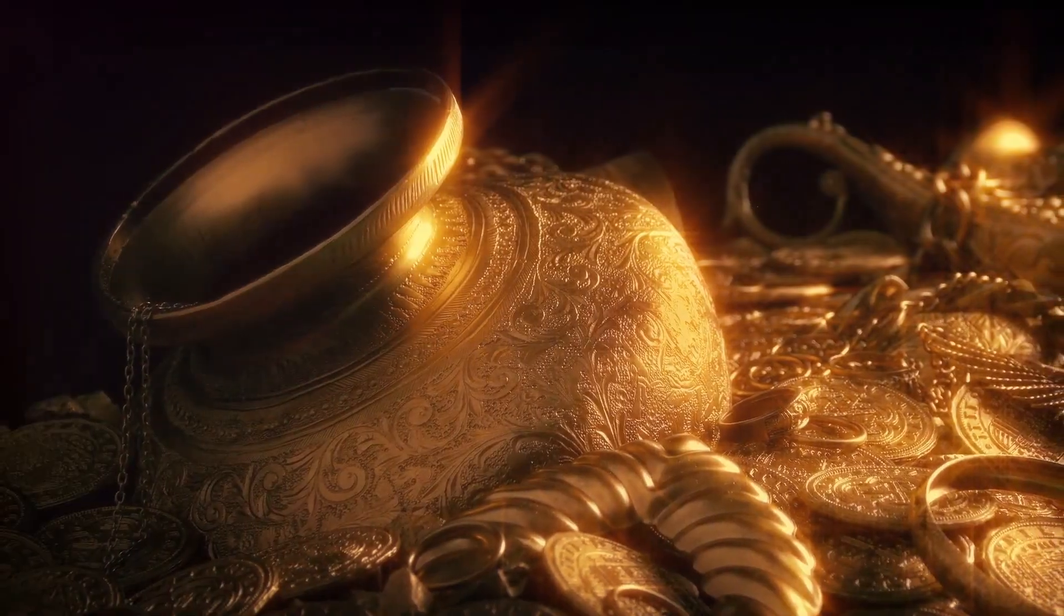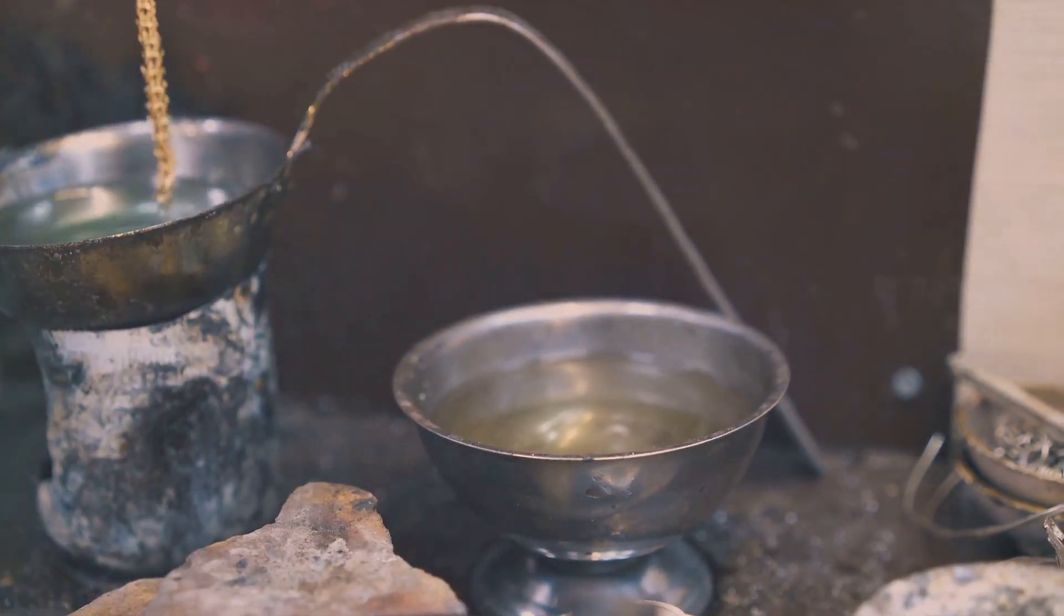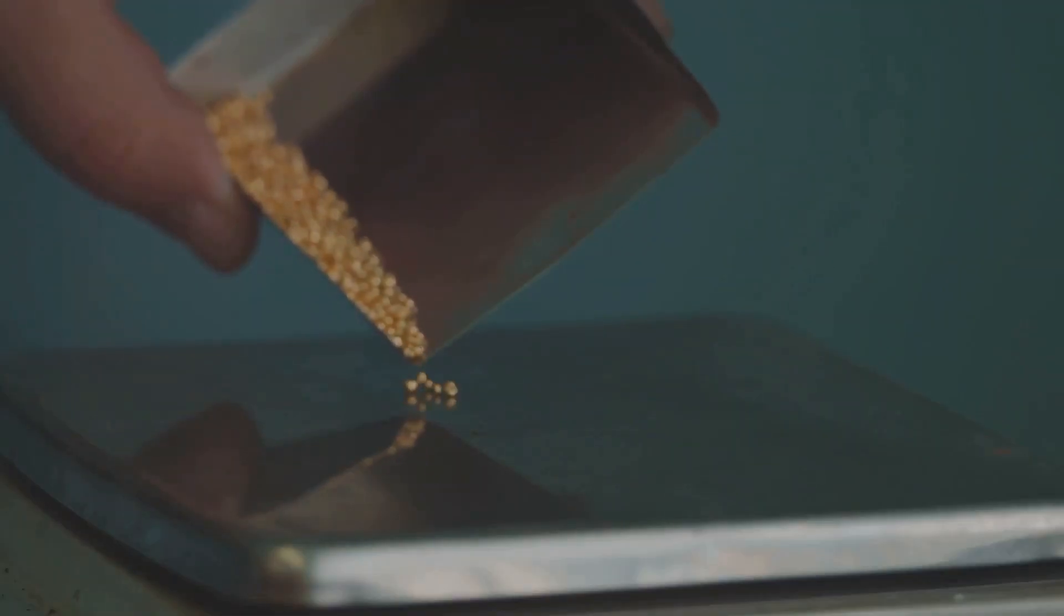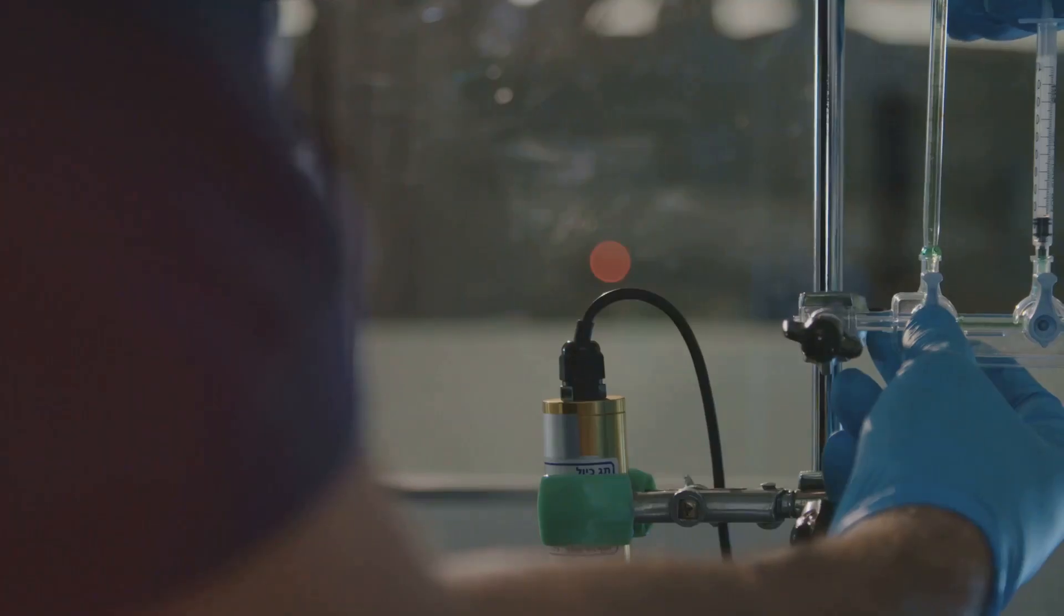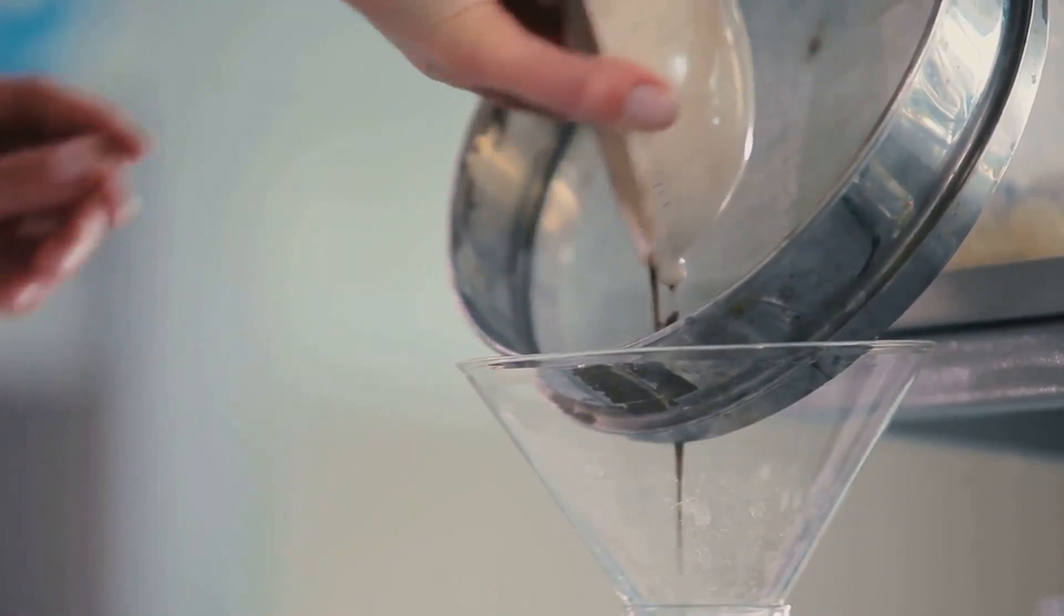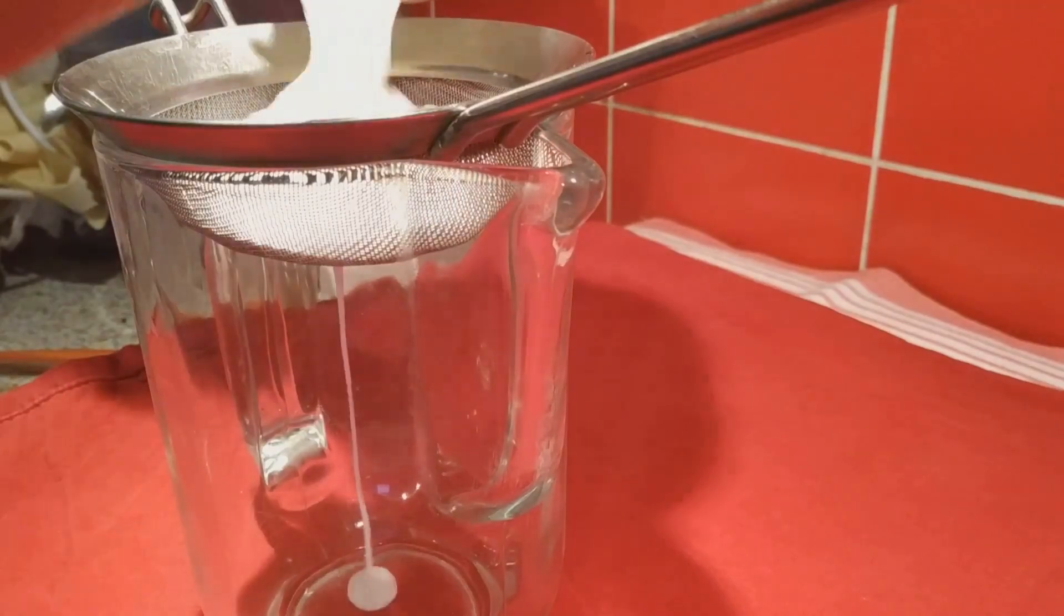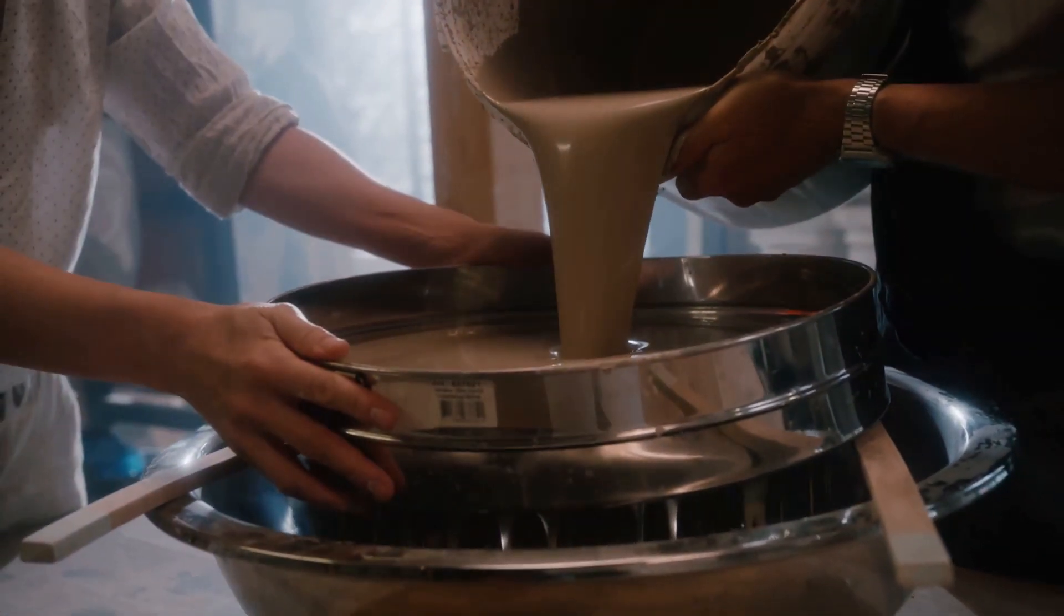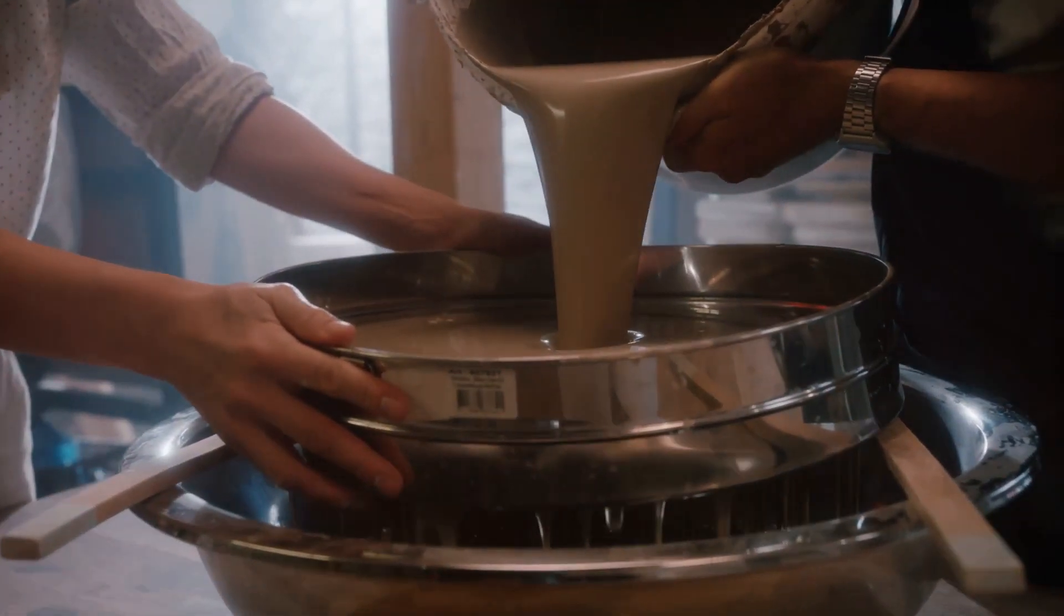Capturing the prize: filtration and collection. We're in the home stretch now. We've successfully separated the gold from the other metals and precipitated it out of solution. Now we need to collect our golden prize. Remember the funnel and filter paper we gathered earlier? This is where they come in. Carefully set up your funnel with the filter paper and place it over a clean beaker. Slowly pour the solution containing the precipitated gold through the filter paper.